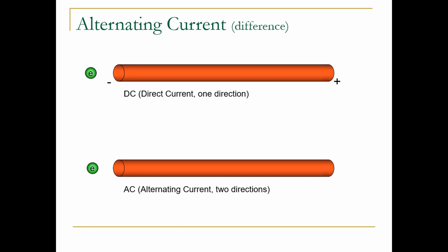This animation illustrates the difference between DC and AC power. For DC power, the electrons always flow from negative to positive, and only in one direction. Whereas AC power alternates the direction of the electron flow.